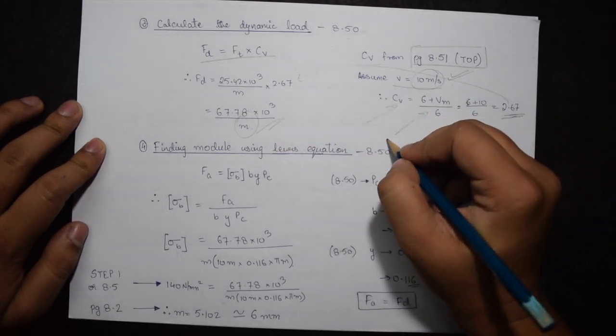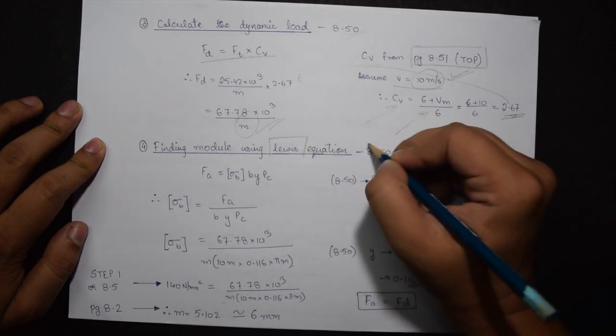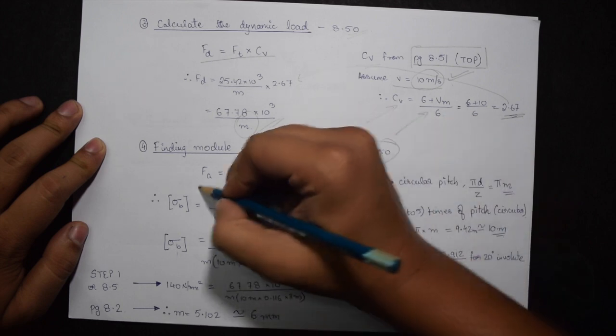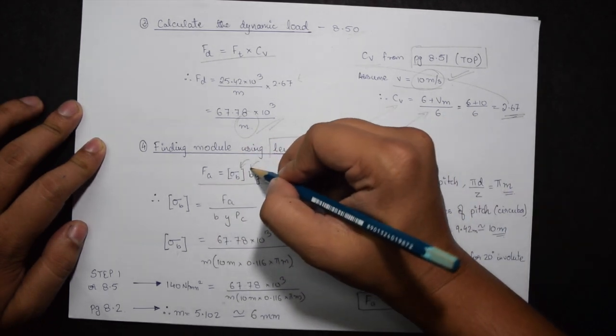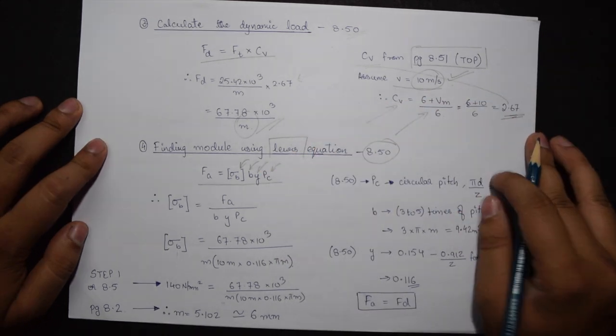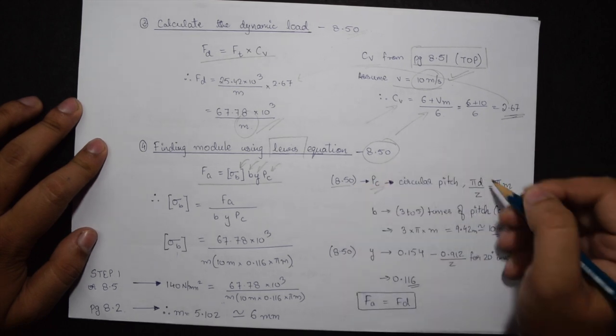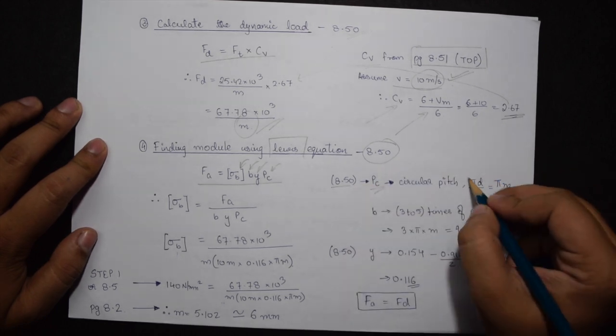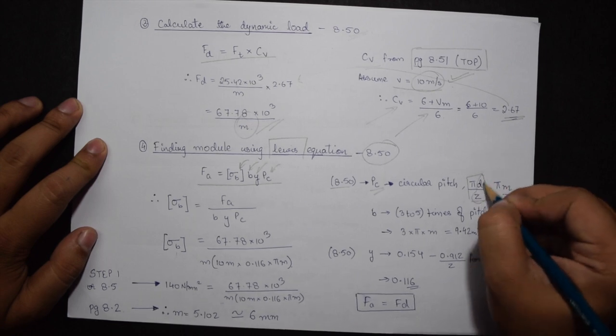From the Lewis equation given on page 8.50, I have a formula FA equals design bending stress times B times Y times PC. PC is the circular pitch given on page 8.50. The formula is pi D by Z. Now D by Z can be written as M, so I will substitute the value of PC as pi M.